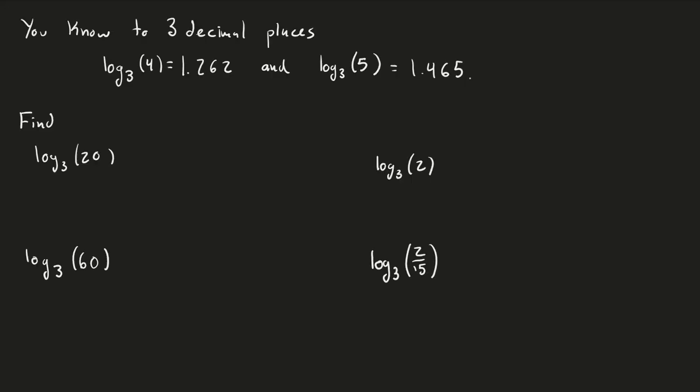You may recognize this one, so suppose you know that to three decimal places that log base 3 of 4 is 1.262 and log base 3 of 5 is 1.465. We want to find these four different values. So for each of these, what you want to do is try to express the numbers on the inside, so like for instance on this first one, this 20, in terms of the values 3, 4, and 5.